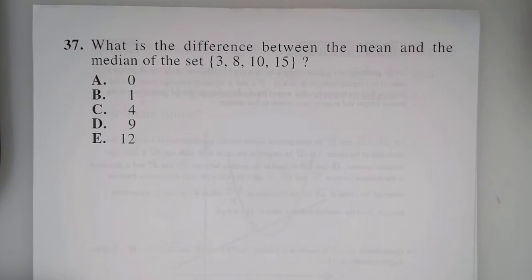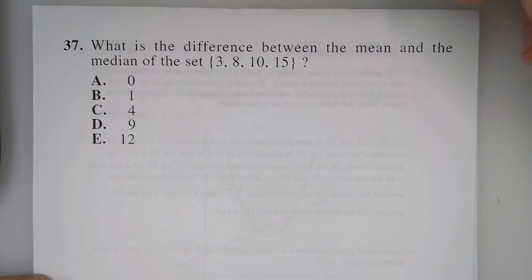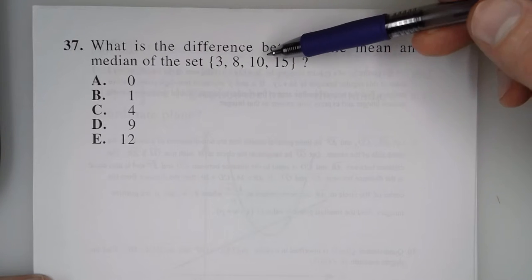In this problem, it asks, what is the difference between the mean and the median of this set? 3, 8, 10, 15.